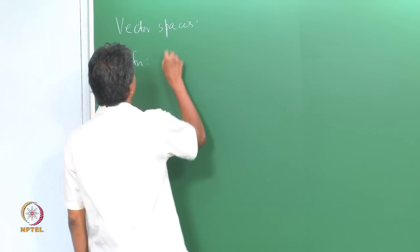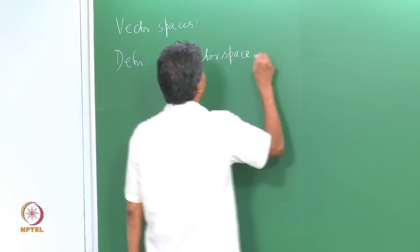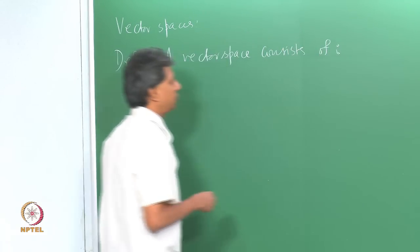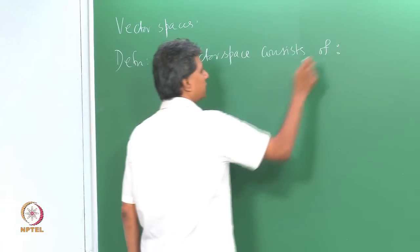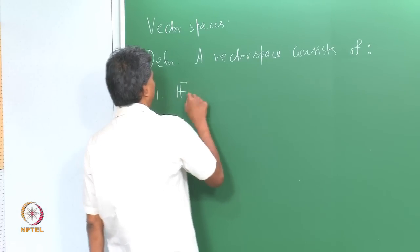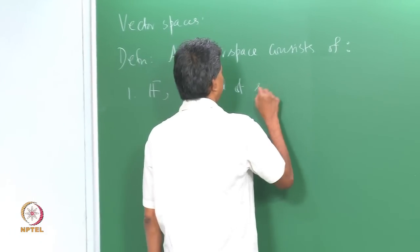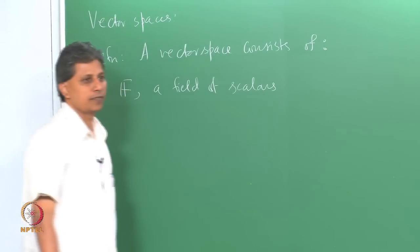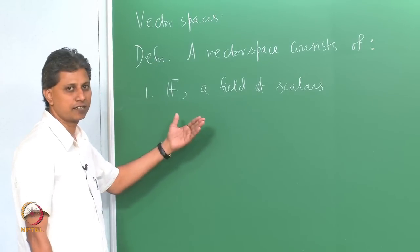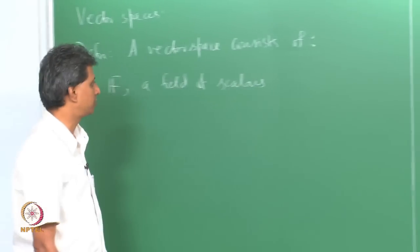A vector space consists of the following: first, a field F — we say vector space over a field. This field F is called the field of scalars. In this entire course of linear algebra, we will restrict our attention mostly to ℝ and in some examples the complex field ℂ as well.